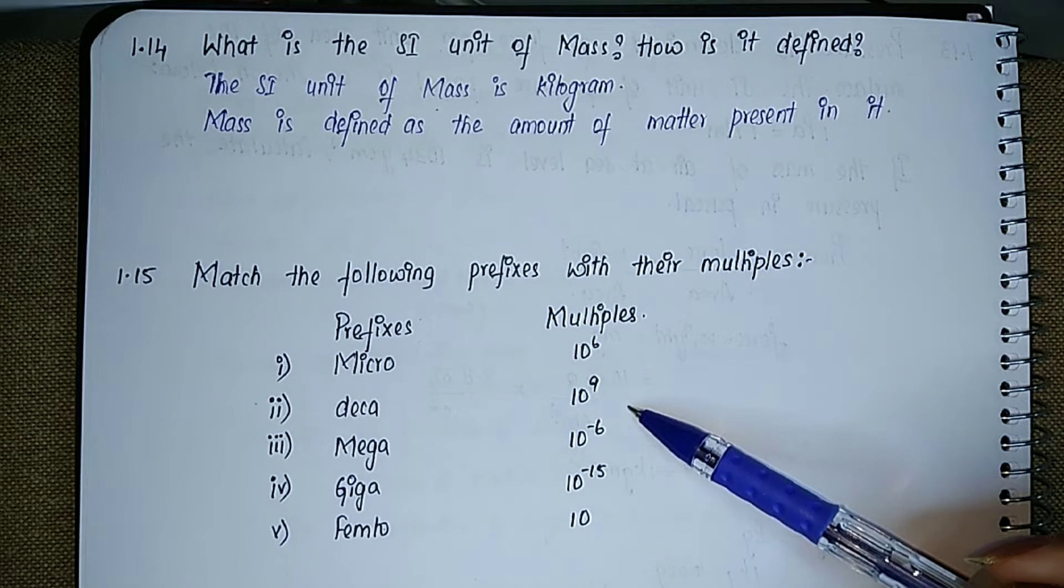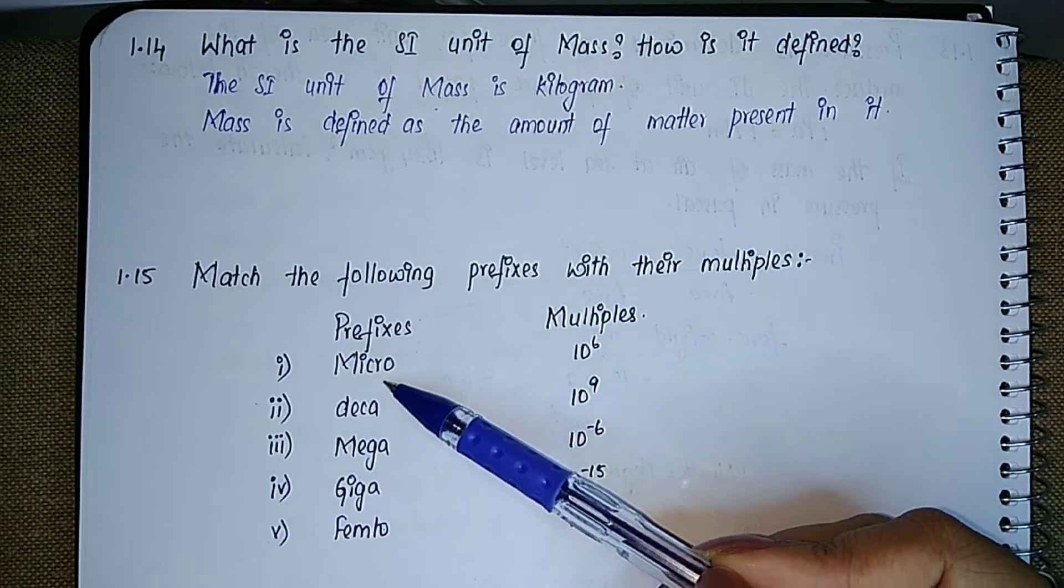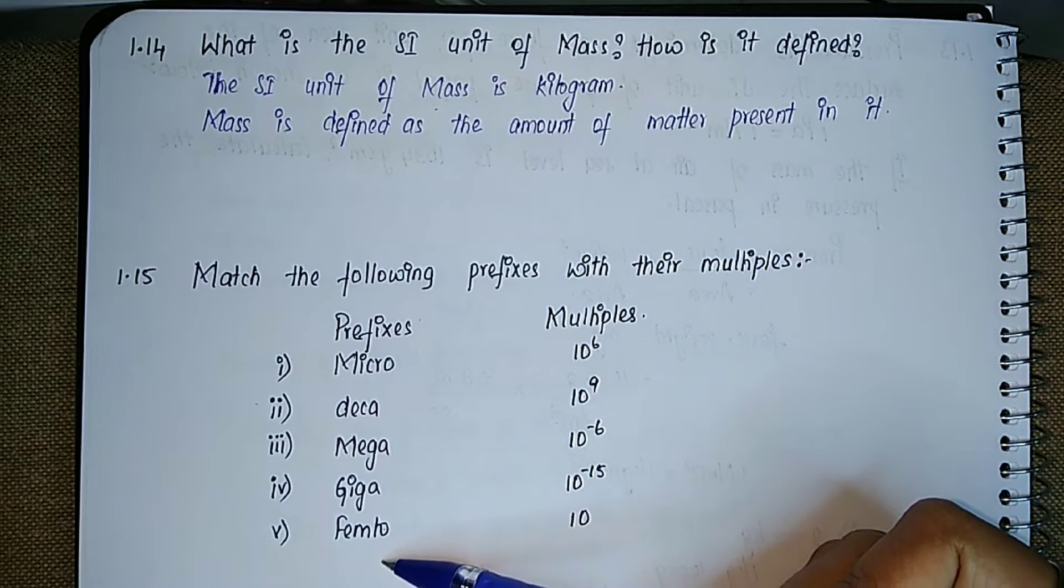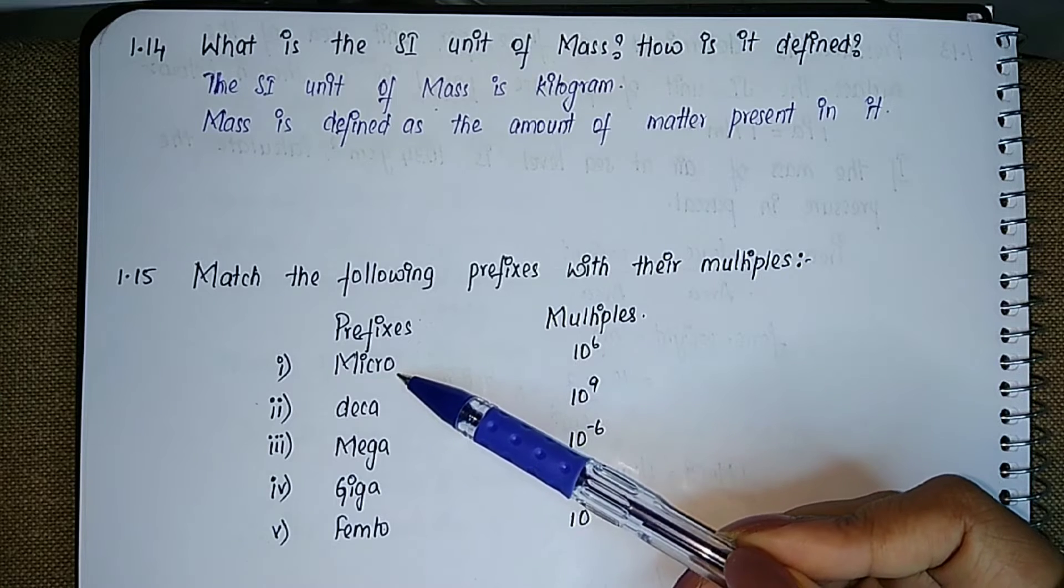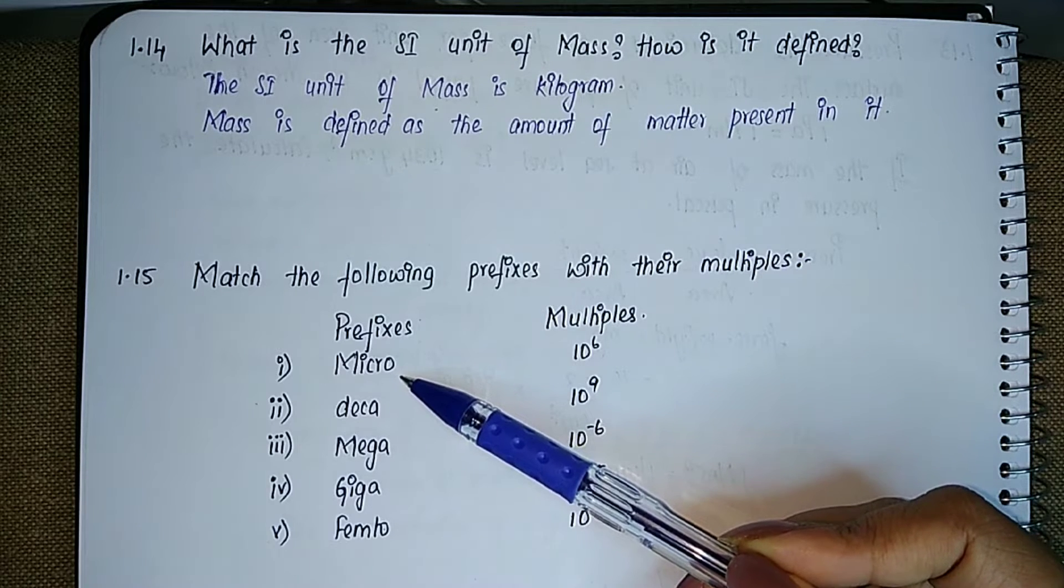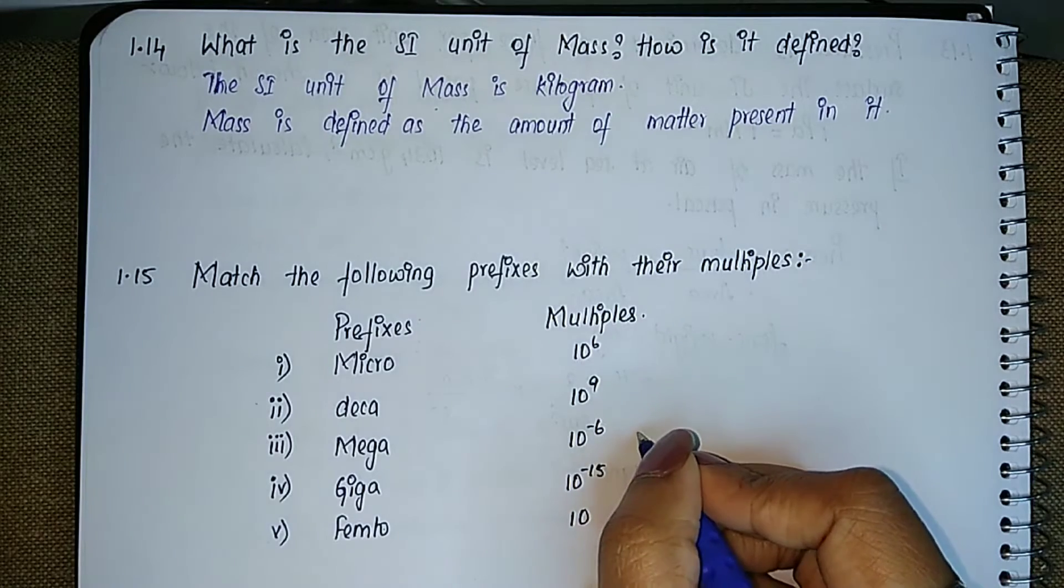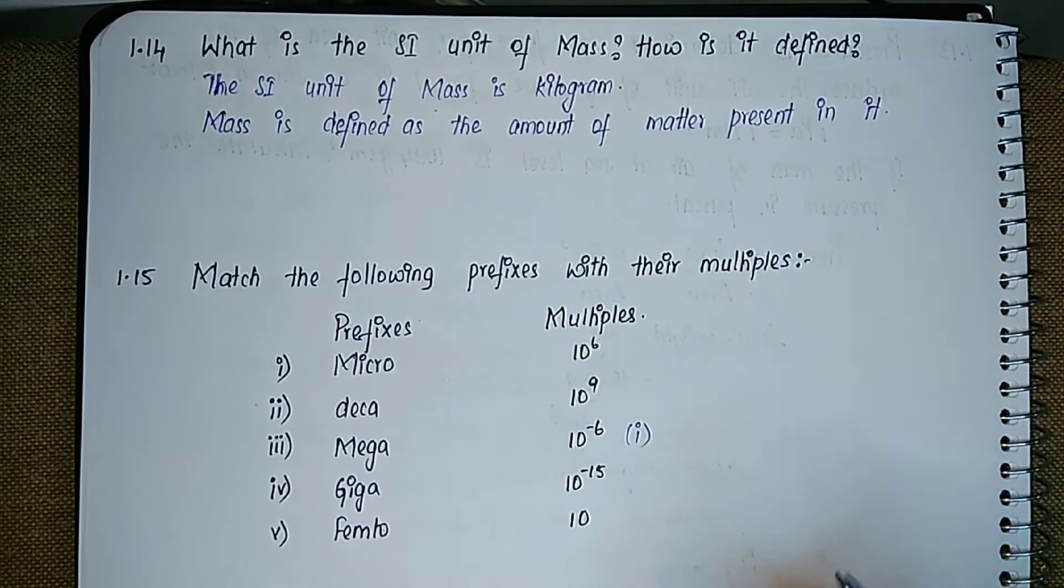So in this case they have given micro, deca, mega, giga, and femto. For micro, your multiple is going to be 10 to the power minus 6. So this is the answer for the first one.